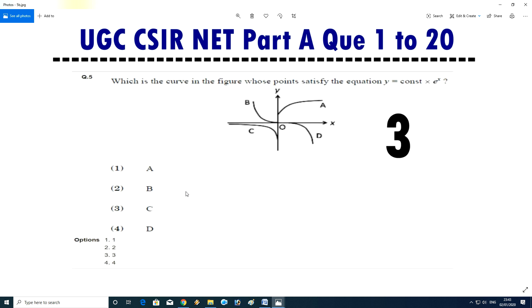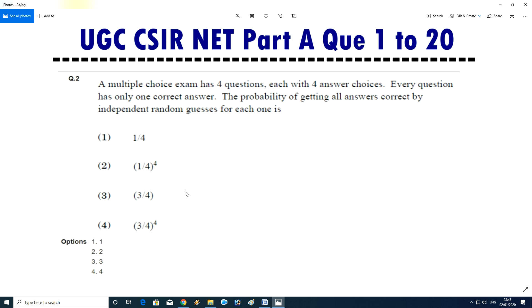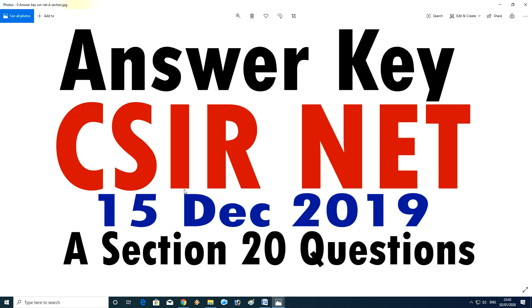So guys, it was the question paper with answers of UGC CSIR NET A section held on 15th December 2019, 20 questions. I am very happy to give you the answers. Please subscribe to my channel and press the bell icon so that every new video will be coming to you.